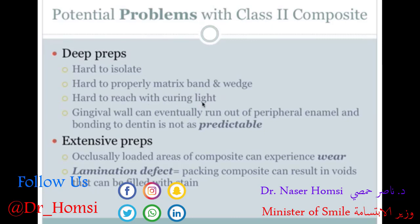It's also technically hard to reach with your curing light. The gingival wall can eventually run out of enamel as you go deeper, leaving only dentin at the bottom where bonding is not as predictable — remember, etching is not as effective with dentin as with enamel. In extensive preps you have more surface area. Occlusally loaded areas can experience wear, and packing composite can result in voids if you play around with it too much.